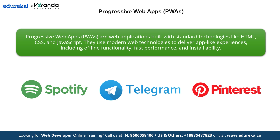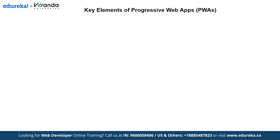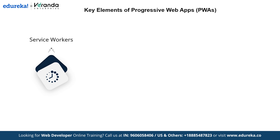These examples highlight the versatility and growing adoption of progressive web apps across the industry. Now let's move on to explore the key elements that make progressive web apps so powerful and versatile. The first one is Service Workers - these are scripts that run in the background of your application. They enable offline functionality by caching resources, ensuring users can still access the app even without an active internet connection.